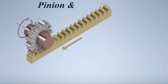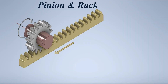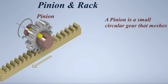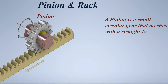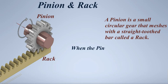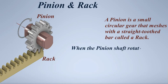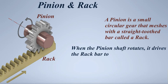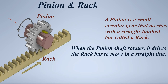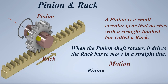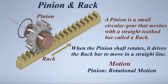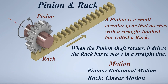Pinion and rack. A pinion is a small circular gear that meshes with a straight-toothed bar called a rack. When the pinion shaft rotates, it drives the rack bar to move in a straight line. Motion — Pinion: rotational motion. Rack: linear motion.